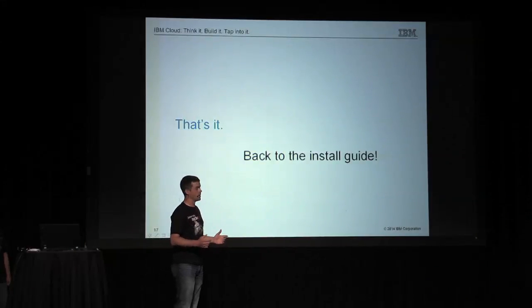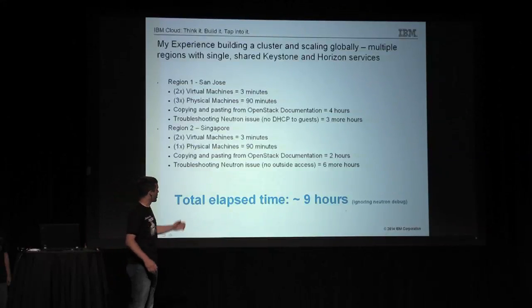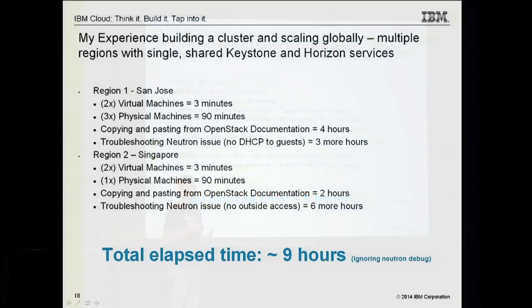I've got all the resources I need to build an OpenStack cloud at SoftLayer at 70 cents an hour. Going back to the install guide, I stepped through all of it. I did this in two regions — I first started in San Jose. I had two virtual machines and three physical machines for the cloud I built. That took about 90 minutes for all the hardware to come up and be ready. Copying and pasting from the OpenStack documentation took about four hours. I ran into problems with Neutron — spent about three hours before I figured out I just needed to restart the DHCP agent and it started working.